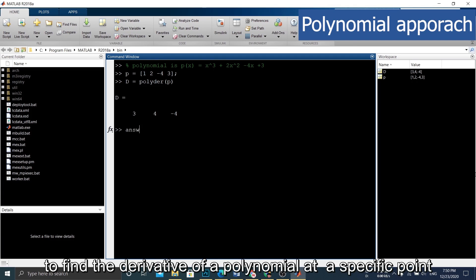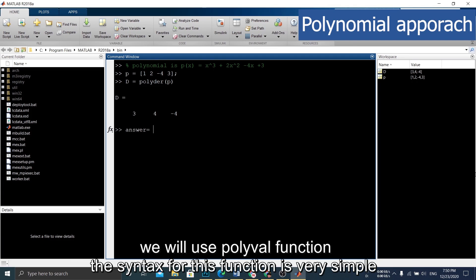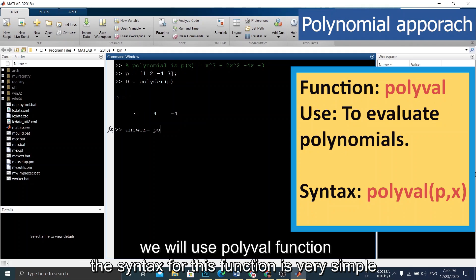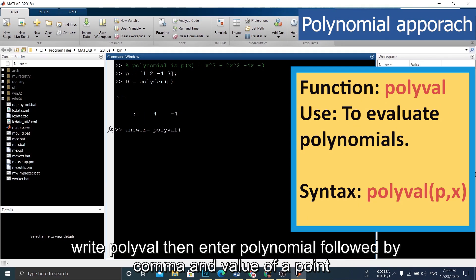To find the derivative of a polynomial at a specific point, we will use the polyval function. The syntax for this function is very simple. Write polyval, then enter polynomial, followed by comma, and value of the point.